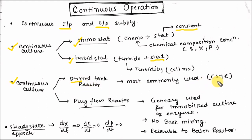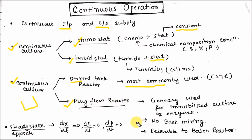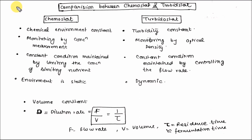Continuous culture can also be divided by reactor type: stirred tank reactor (CSTR) and plug flow reactor. In a stirred tank reactor, mixing is done by the impeller or stirrer and it is the most commonly used reactor in various industries. The plug flow reactor is generally used for immobilized culture or enzymes. In a stirred tank reactor, back mixing occurs, but in a plug flow reactor there is no back mixing. The plug flow reactor resembles a batch reactor and operates on a steady-state approach, where dx/dt, ds/dt, and dp/dt all equal zero.